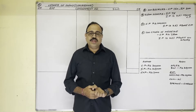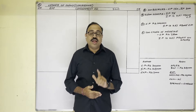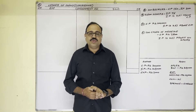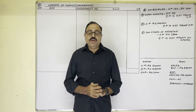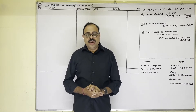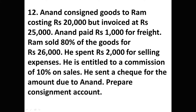Hello students. In this video I'm going to explain problem 12 from the consignment topic. This video is for degree students; previous video links are available in the description box. The question: Anand consigned goods to Ram costing 20,000 rupees but invoiced at 25,000 rupees. Anand paid 1,000 rupees for freight. Ram sold 80% of the goods for 26,000 rupees, spent 2,000 for selling expenses, and is entitled to a commission of 10% on sales. He sent a check for the amount due to Anand. Prepare the consignment account.